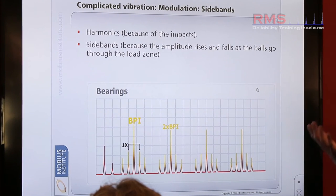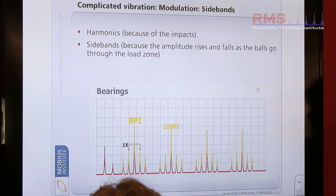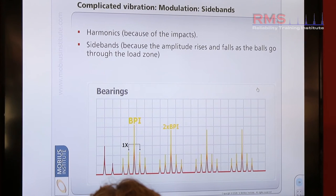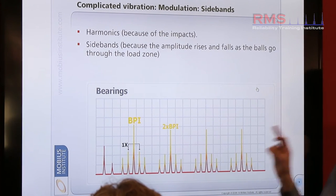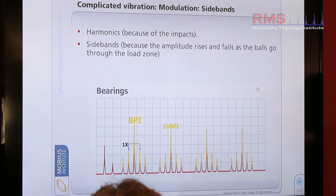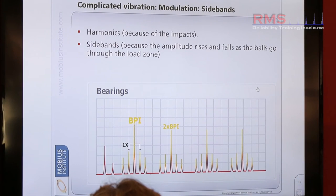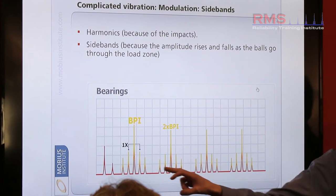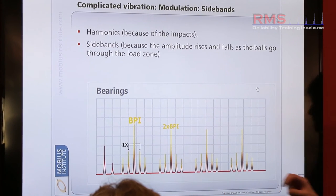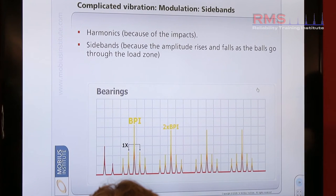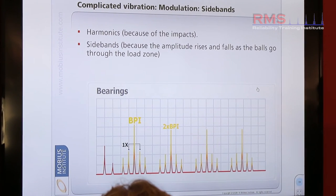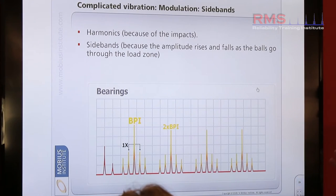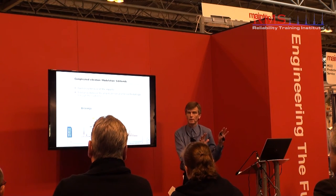But we've got shock as well. So what do we see? Shock results in harmonics — equally spaced peaks — and sidebands where we see equally spaced peaks around those harmonics. Maybe that's one step too far for those of you new to this subject, but distinctly different pictures to simplify.